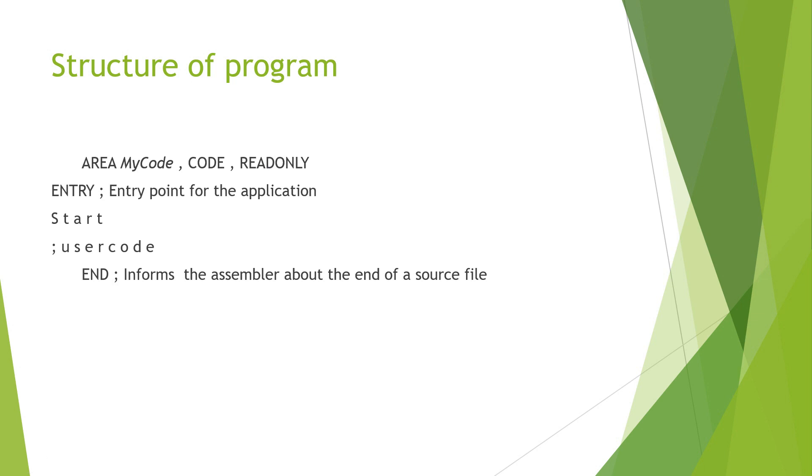ENTRY is the assembler directive which indicates the first instruction to be executed in the program. We have a start. It is not an assembler directive, but it is a label that we are going to give to indicate that it is the start of the machine instructions. The last line of this program is an END assembler. This is going to tell that we do not have more codes to follow and it is the end of the program.